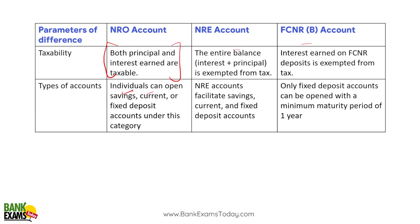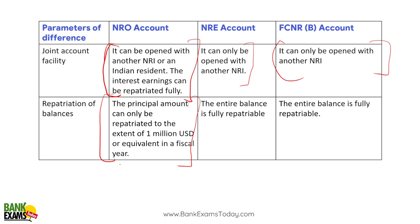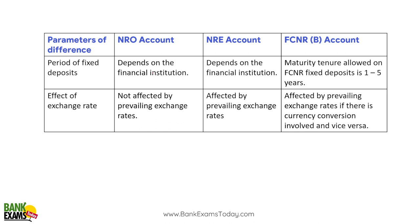Types of accounts: NRO and NRE allow savings, current, and fixed deposit accounts. FCNR allows only fixed deposit accounts with a minimum tenure of one year and maximum five years. Joint account: NRO can be opened with another NRI or Indian resident; NRE can only be opened with another NRI; FCNR can also only be opened with another NRI. Repatriation: NRO has a one million dollar limit per financial year; NRE and FCNR have no repatriation limitation. Period of deposit: no limit for NRO and NRE; FCNR is 1 to 5 years.